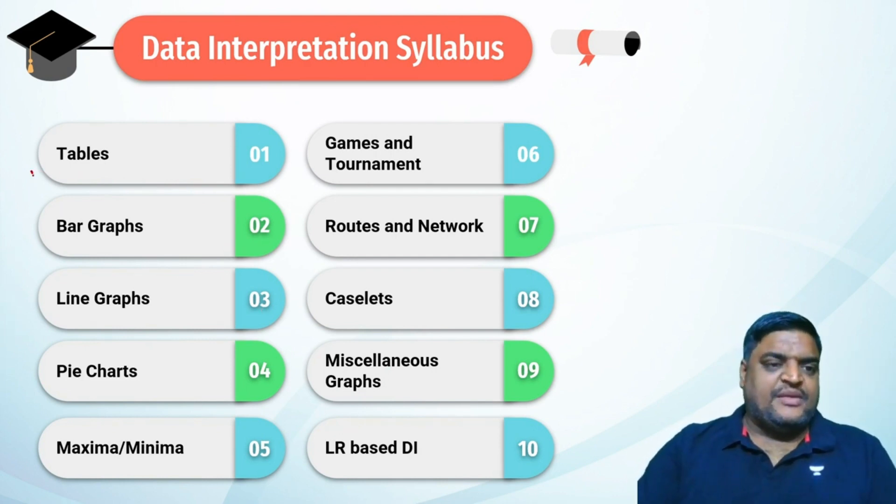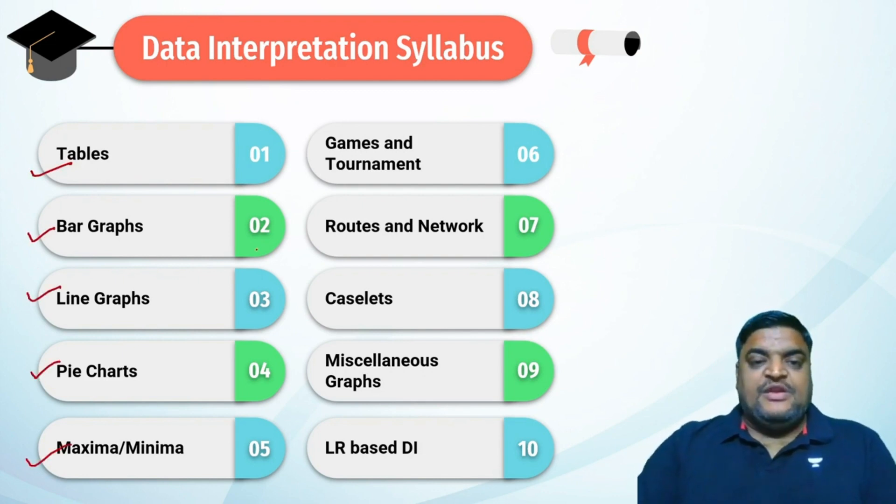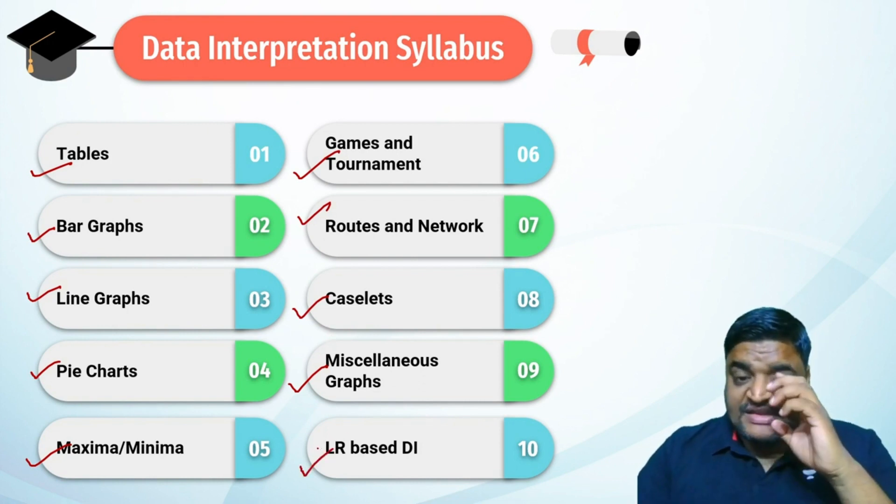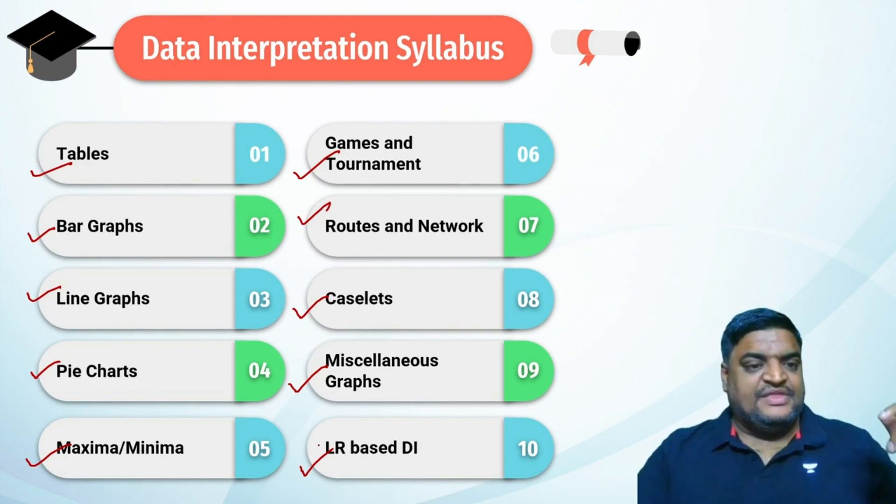The topics you should be covering in data interpretation are tables, bar graphs, line graphs, pie charts, maxima-minima, games and tournaments, routes and networks, caselets, miscellaneous graphs including spider webs, 3D triangular graphs, error-based DI, and logical listing-based DI.